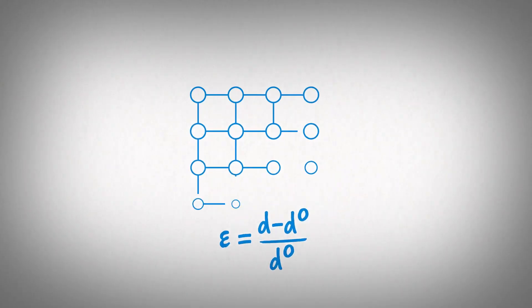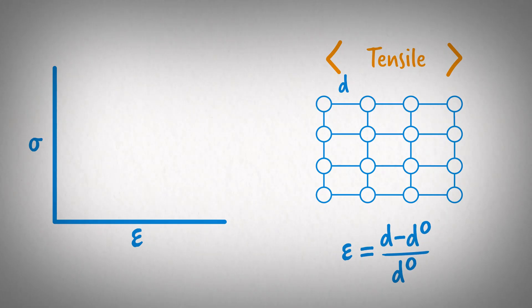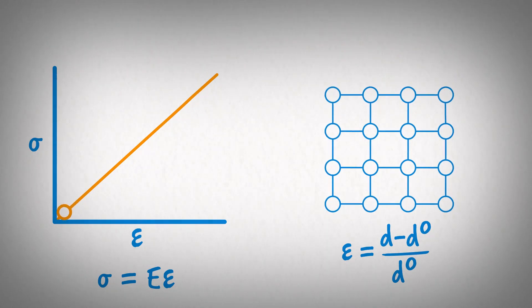This effect is often studied by stretching a metal and measuring the effect between stress and strain. When a load is first applied, the relationship between stress and strain is linear. This occurs as a result of the stretching of atomic bonds. Once the load is released, most materials will return to their original shape. This is called elastic deformation.